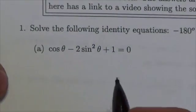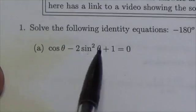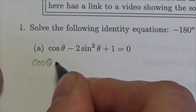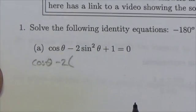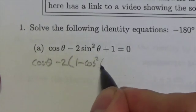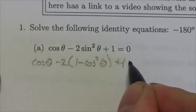It probably wouldn't take you a whole lot of time here to realize, well, I've got that sine squared there. So maybe what I'll do is I'll rewrite this as the cosine of theta minus 2 times, well, sine squared of theta will be 1 minus the cosine squared of theta, plus 1 equals zero.